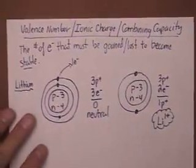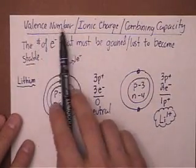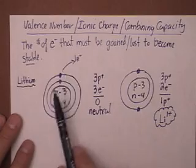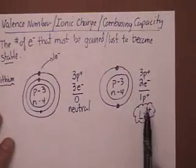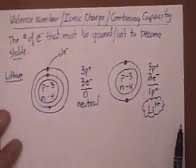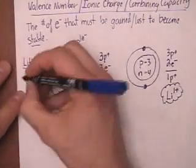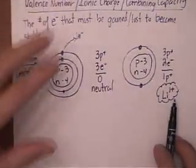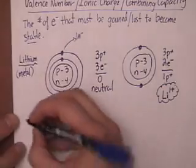You've got to watch out because you could be asked: what's the number of valence electrons? That's a totally different question. The number of valence electrons is the number of electrons in the outermost shell, which is one. So the number of valence electrons is one electron, but the valence number is 1+. Ionic charge: 1+. Combining capacity: 1+. That's for lithium, which is on the left-hand side of the periodic table — it's a metal. Metals will tend to always be positive.